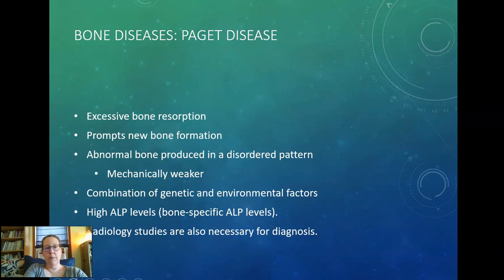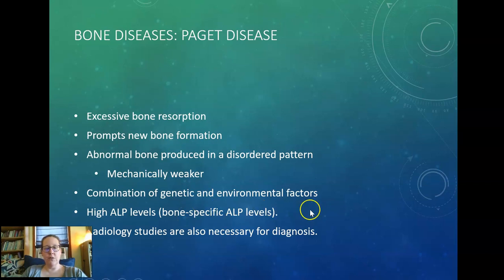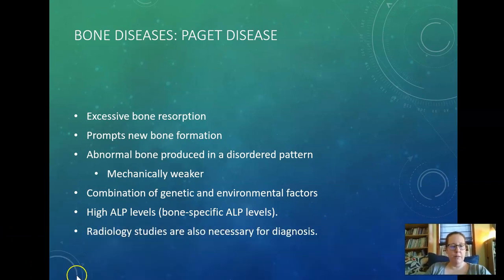The causes of Paget's disease are a combination of genetic and environmental factors. There is evidence of high alkaline phosphatase levels. Usually you have to run the specific test to get the bone-specific alkaline phosphatase levels — go back to your enzyme chapter and look at how you distinguish liver from bone alkaline phosphatase. They also obviously need radiology studies to diagnose this properly.